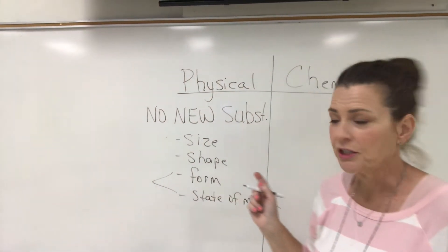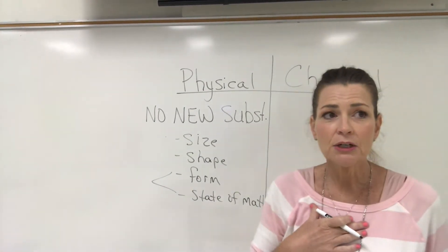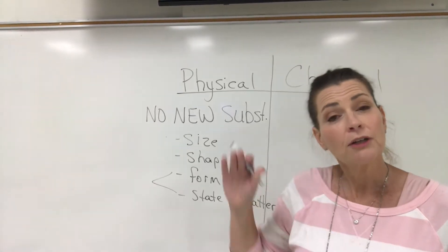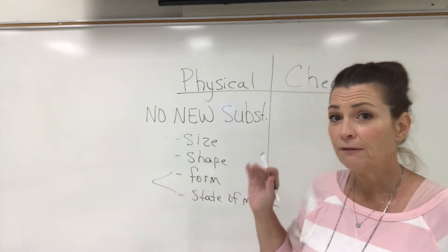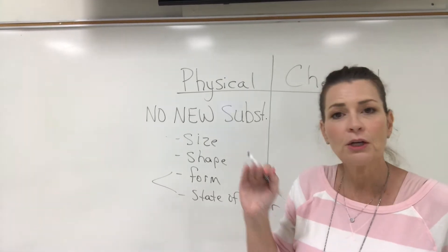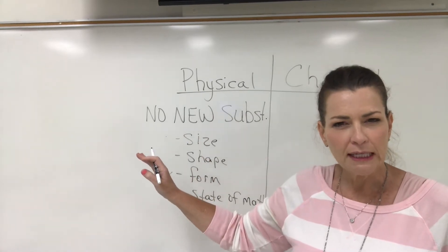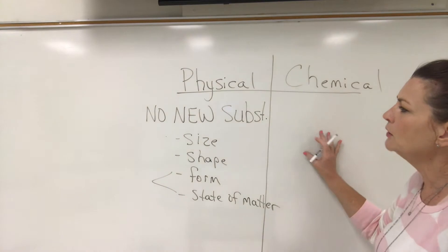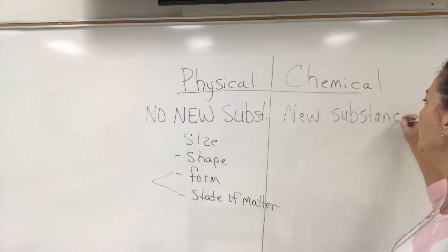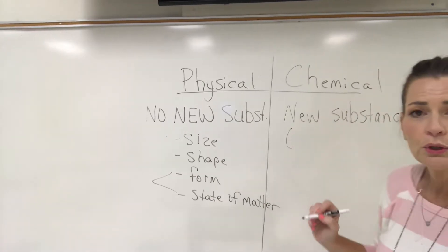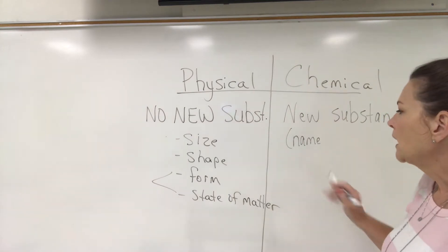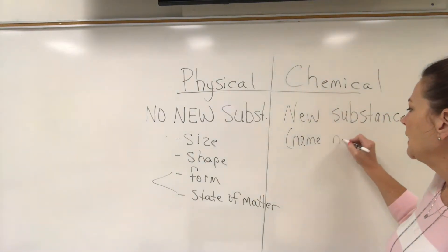Now we're going to talk about chemical changes. Chemical changes are the most fun, and I also think it's easier to figure out if a change is chemical or physical if you start with chemical first. If you learn chemical very well and go through the rules, it makes it easier to figure out. The rules for a chemical change: it becomes a new substance — a brand new product. A lot of times you'll notice it gets a name change.